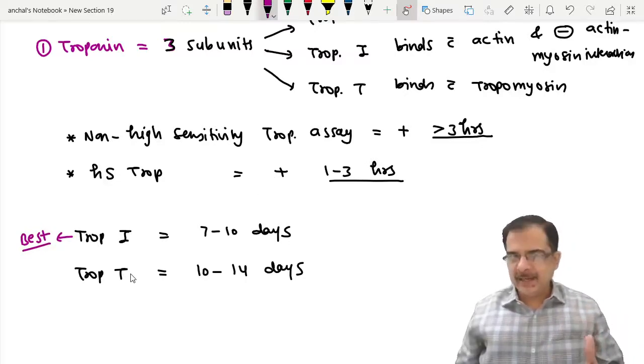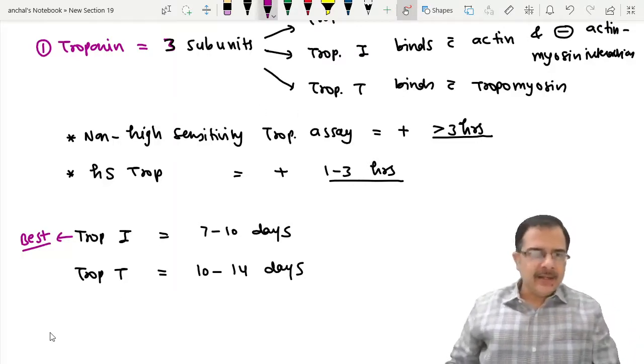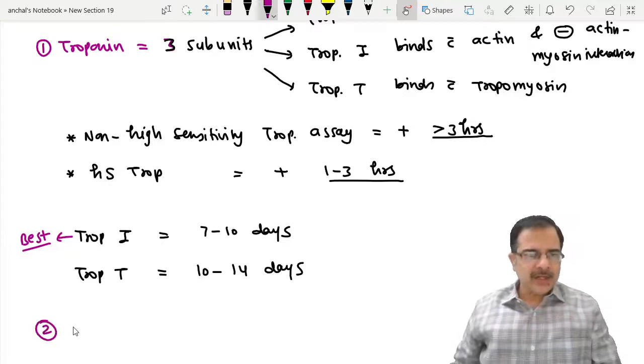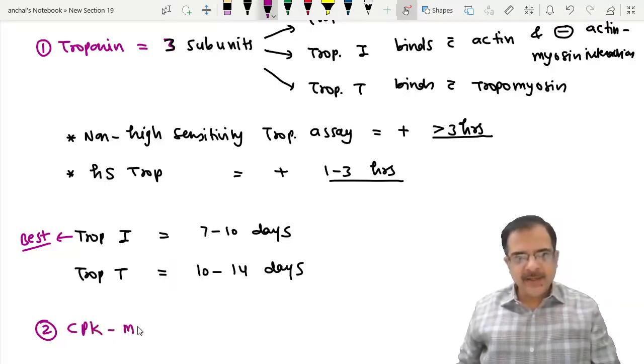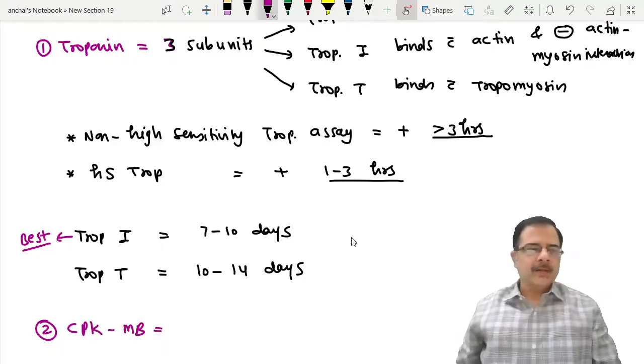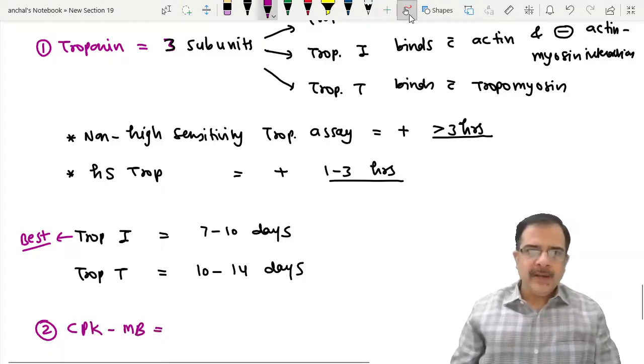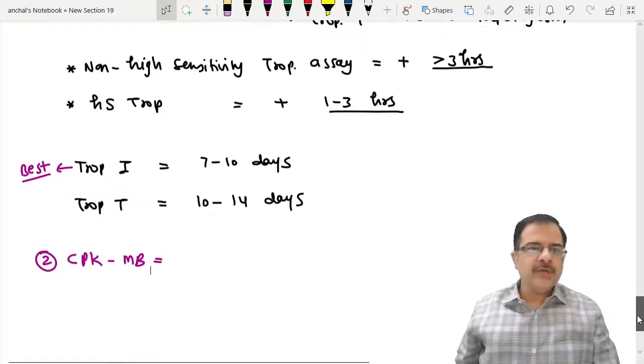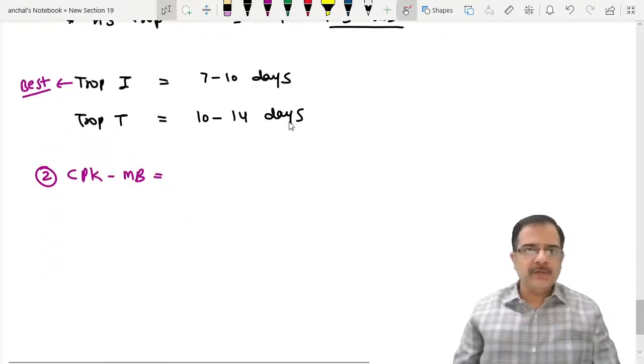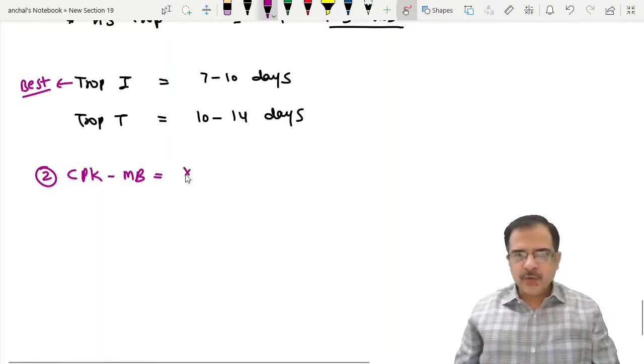The second marker is CPK, and the fraction is CPK-MB. Nowadays, CPK-MB is only done when troponin is not available, and it will be useful in re-infarction.